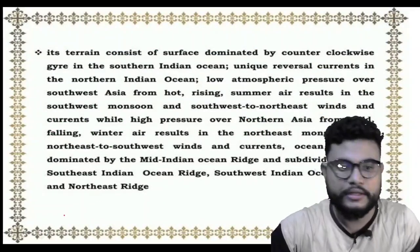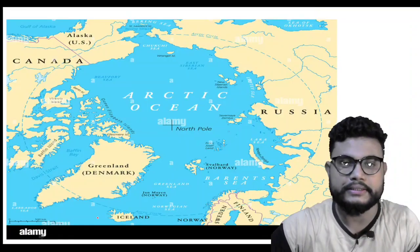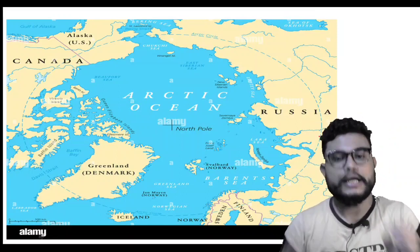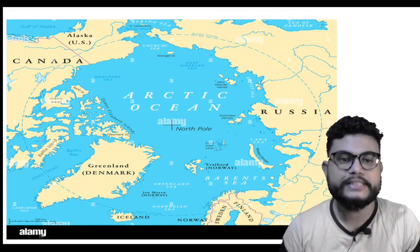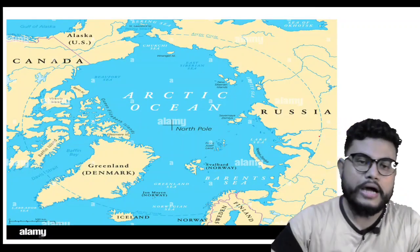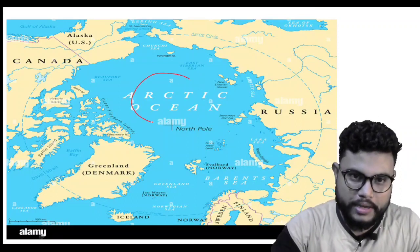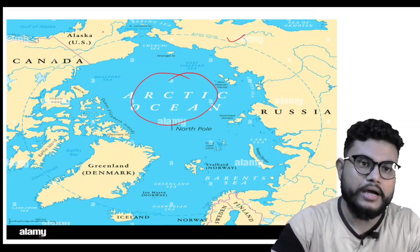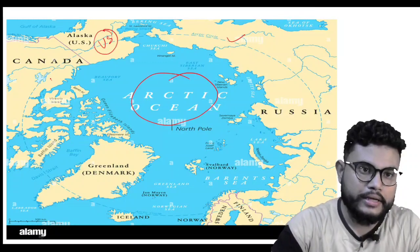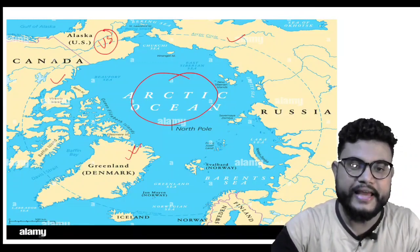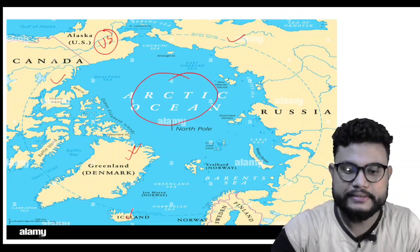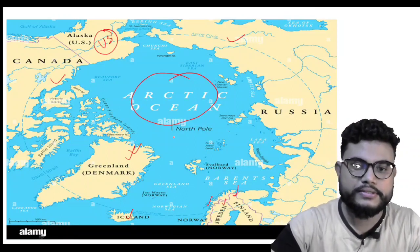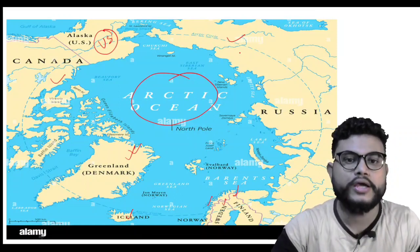Now we will talk about another ocean, which is the smallest ocean — the Arctic Ocean. If we look at the Arctic Ocean, the surrounding countries include Russia, Alaska (which is part of the US), Canada, then Greenland (which is Denmark), Iceland, Norway, Sweden, and Finland. These countries border the Arctic Ocean.